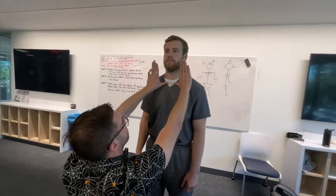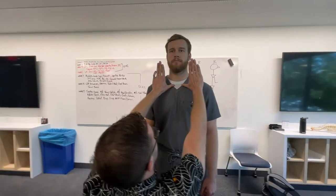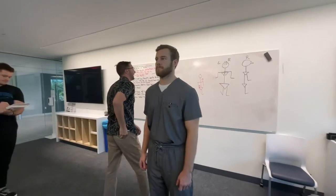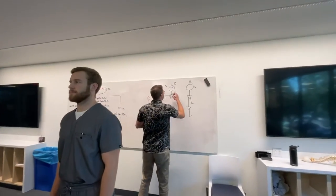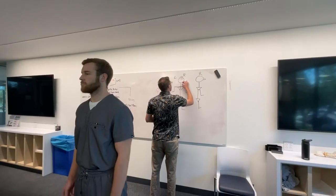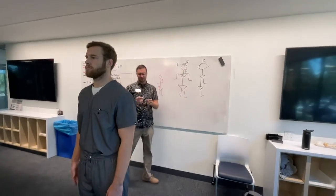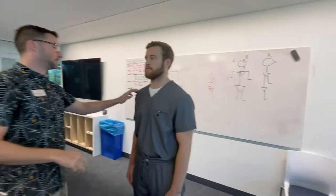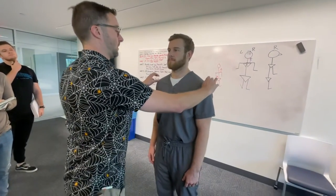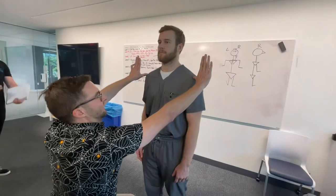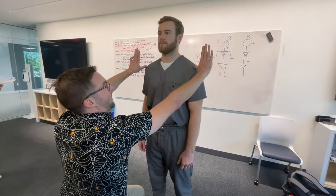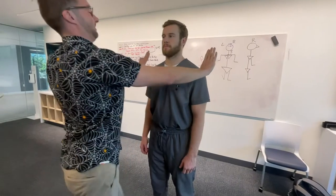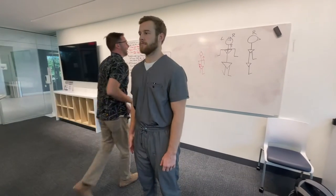What do you see? His right SC joint is high — so we're going to write that down. Next we're going to do AC. What do you see? Left one down, right one up. Right one's higher.